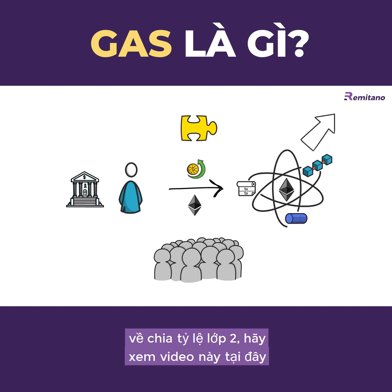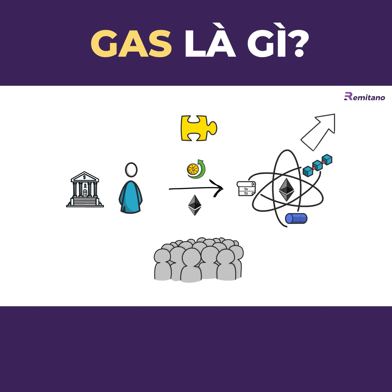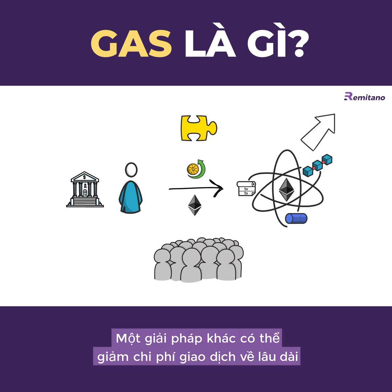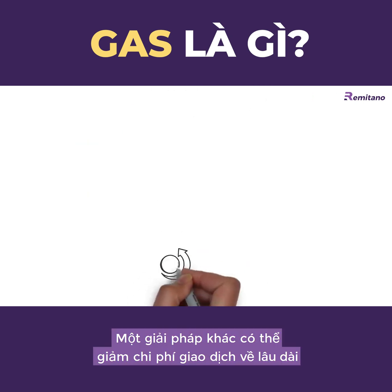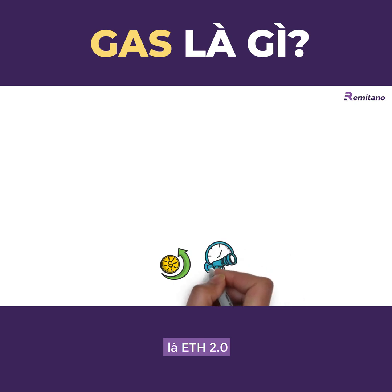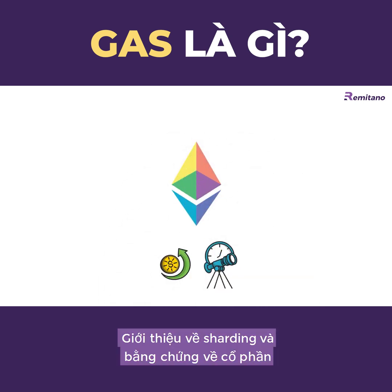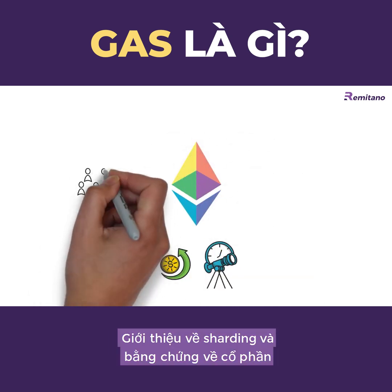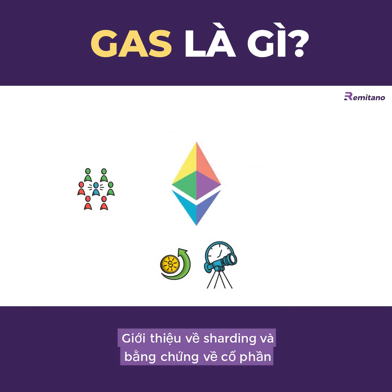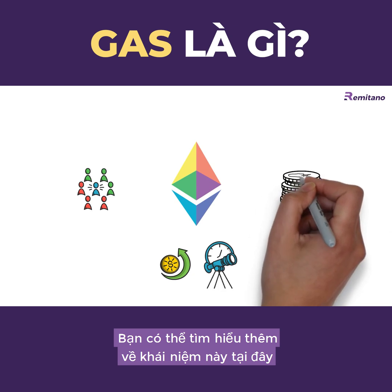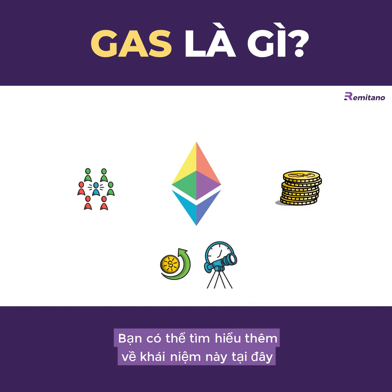Besides Layer 2 scaling, another solution that can decrease transaction costs in the long run is ETH2, which introduces sharding and proof of stake.